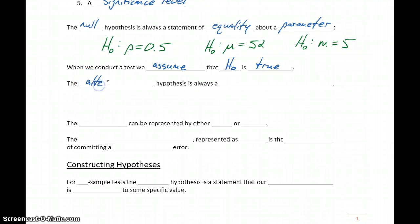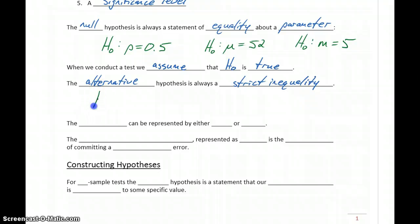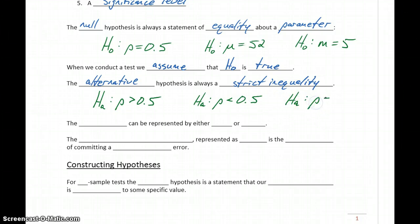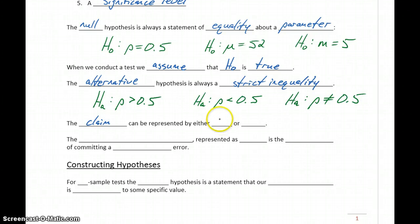Our alternative hypothesis is always a strict inequality. So our null hypothesis always had an equal sign. Our alternative hypothesis, which is going to be represented as H sub A, would be a statement that p is, for instance, greater than 50%. We could say that p is less than 50%, or that our population proportion is simply not equal to 50%. Our alternative statement is always a statement that our population parameter somehow differs from what we're assuming in that null hypothesis — so either greater than, less than, or just not equal to. The claim in our problem can be represented by either the null hypothesis or the alternative hypothesis, so H₀ or H_A.